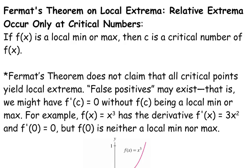What his theorem says is that your relative extrema, maxes and mins, can only happen at critical numbers. So if f(x) is a local minimum or max, then c is a critical number of f(x). Just because it's a critical point doesn't mean that it's necessarily a max or min. It means it could be, it's a candidate, but it is not for sure a max or minimum.